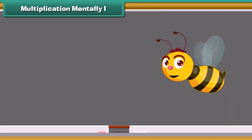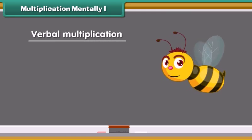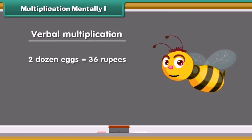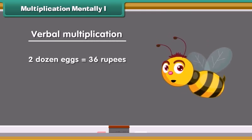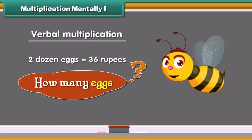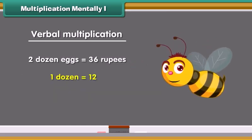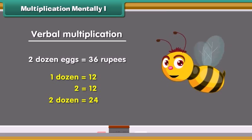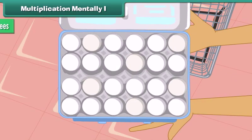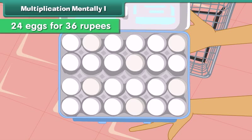Let us look at some examples of verbal multiplication. Jennifer buys 2 dozens of eggs for Rs. 36. How many eggs did she buy? We know 1 dozen equals 12. Therefore, 2 dozen will be equal to 24. Thus, Jennifer bought 24 eggs for Rs. 36.